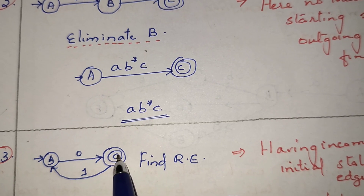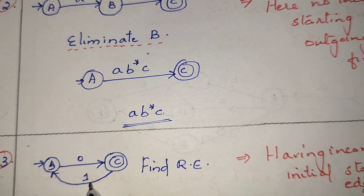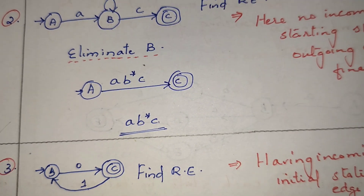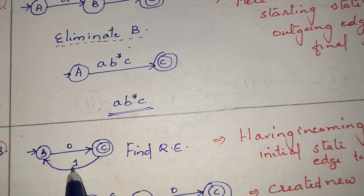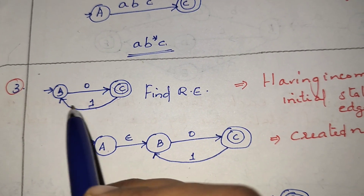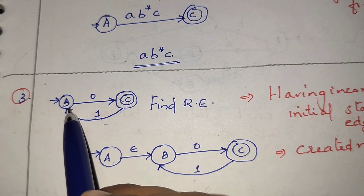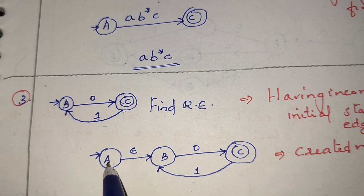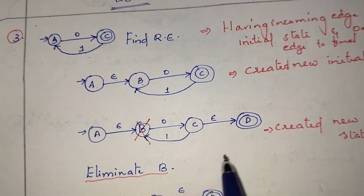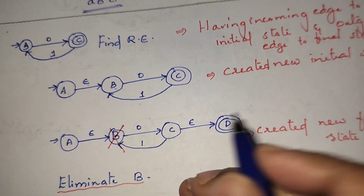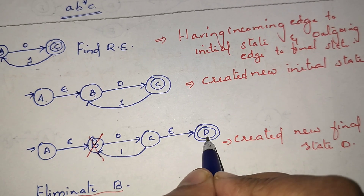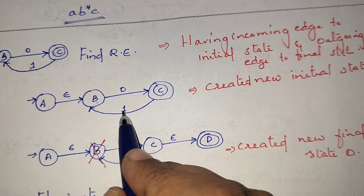In the next problem, the starting state has an incoming edge, so we create a new starting state on epsilon move. The final state has an outgoing edge, so we create a new final state on epsilon move as well. After applying both rules, we proceed to eliminate intermediate states.